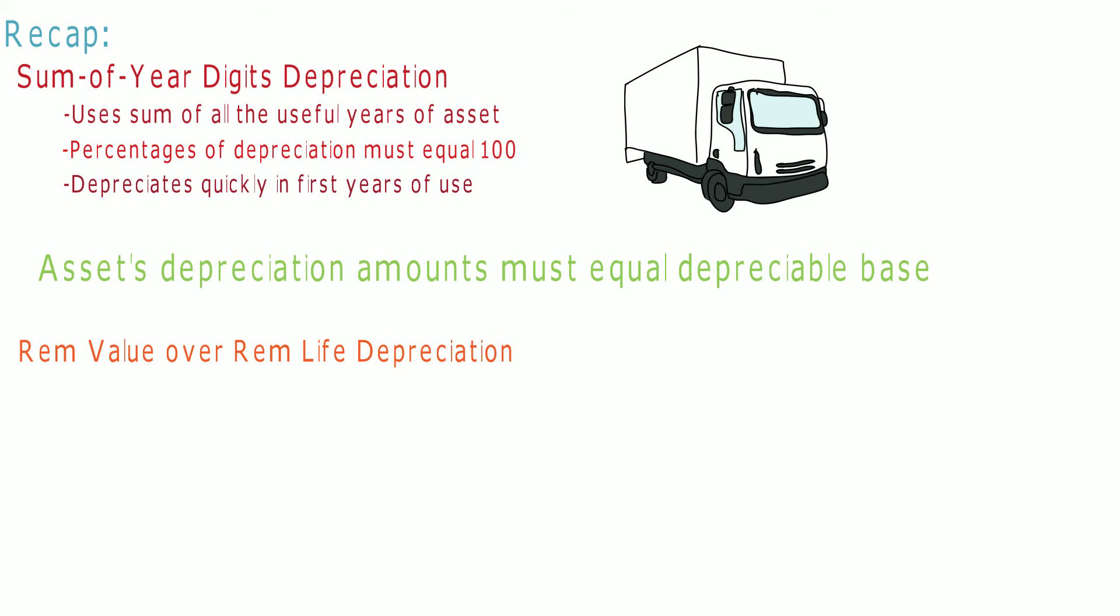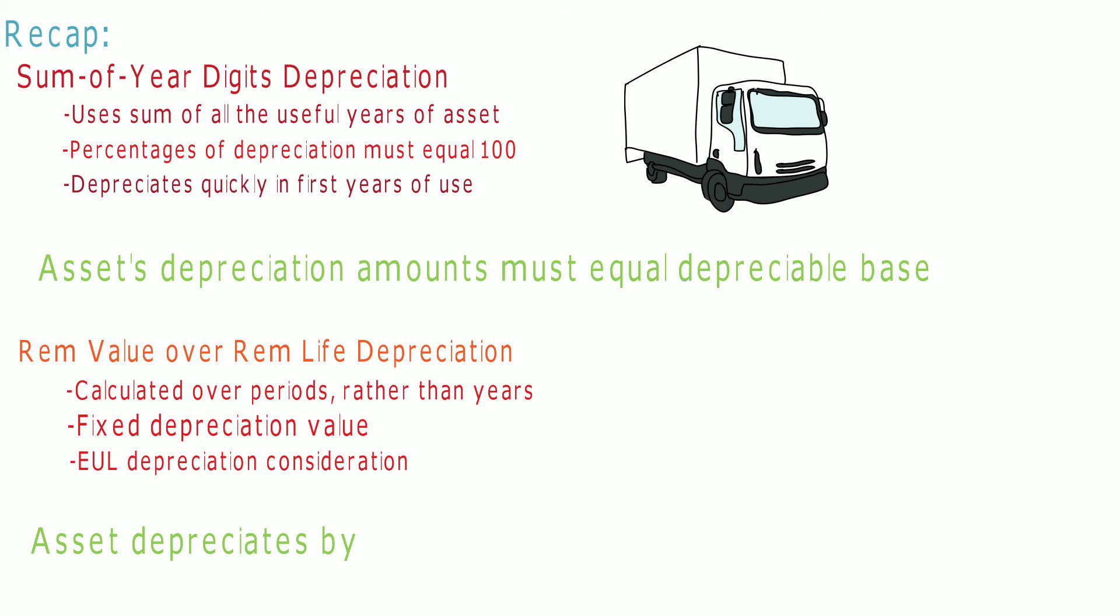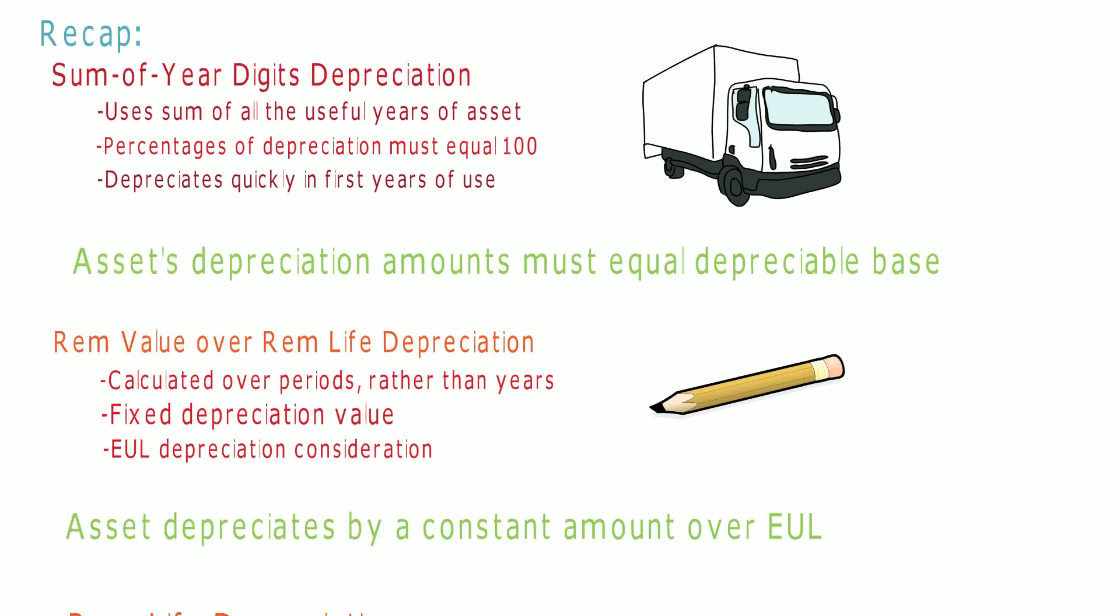Remaining value over remaining life depreciation calculates an asset's depreciation in periods and has a steady depreciation amount. This form of depreciation also takes into account the asset's remaining useful life when calculating the depreciation value.